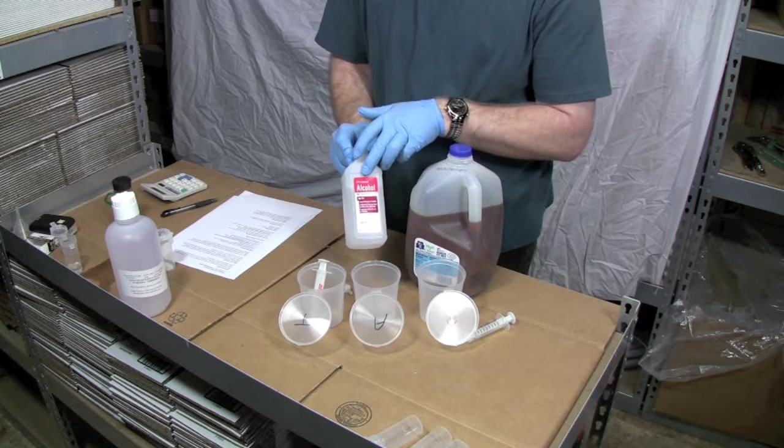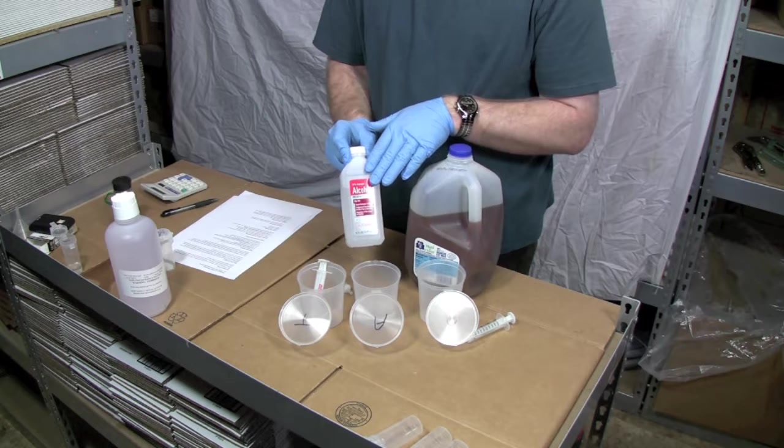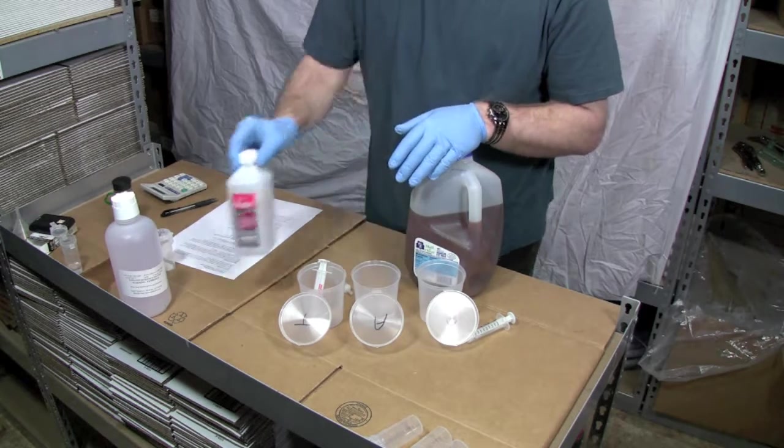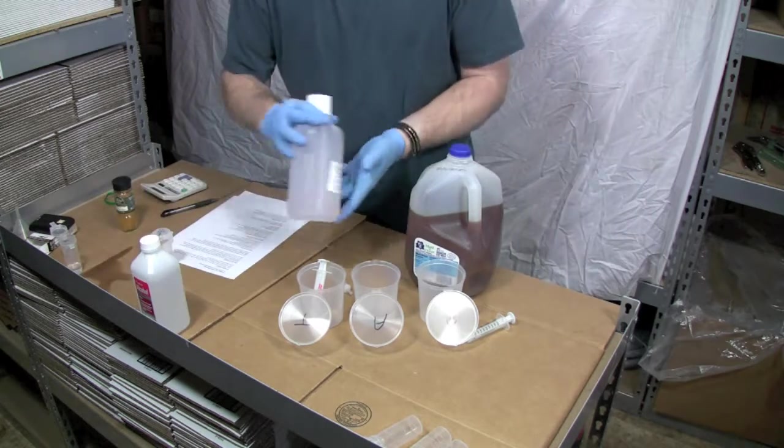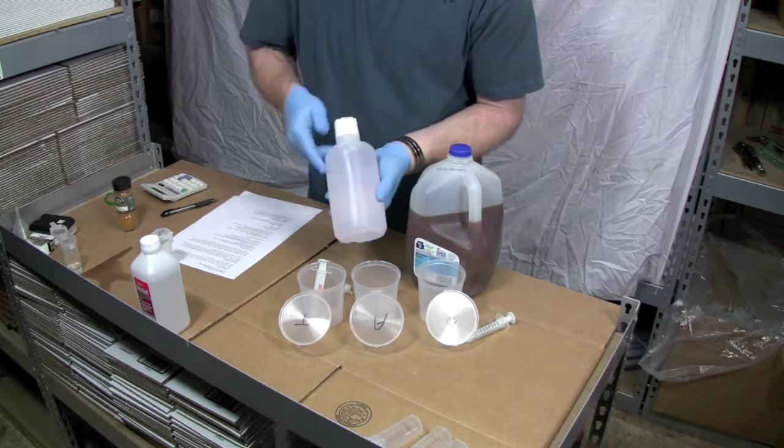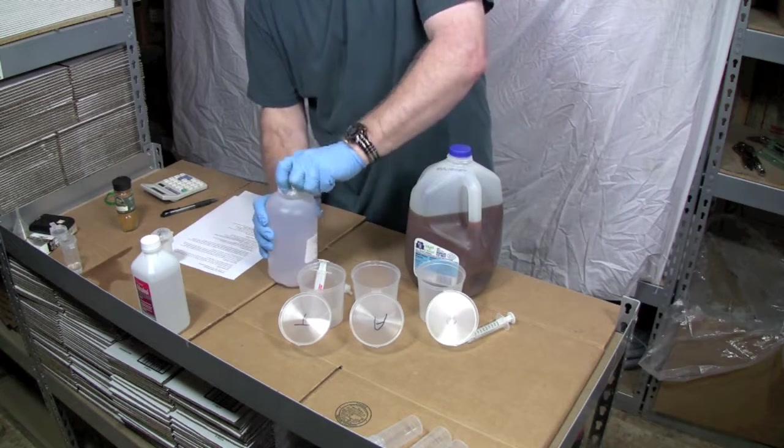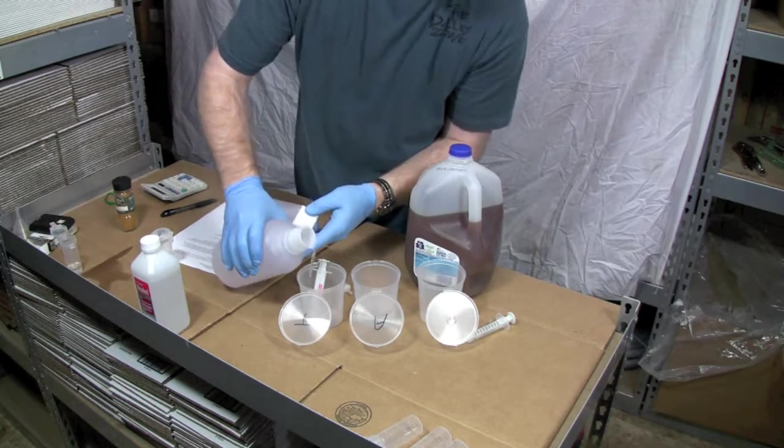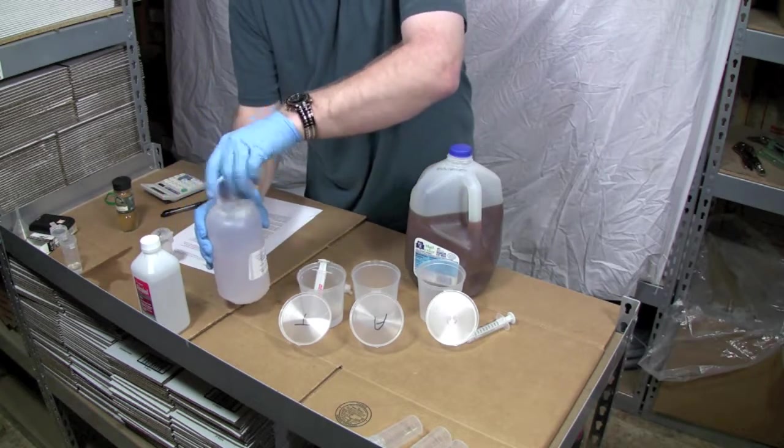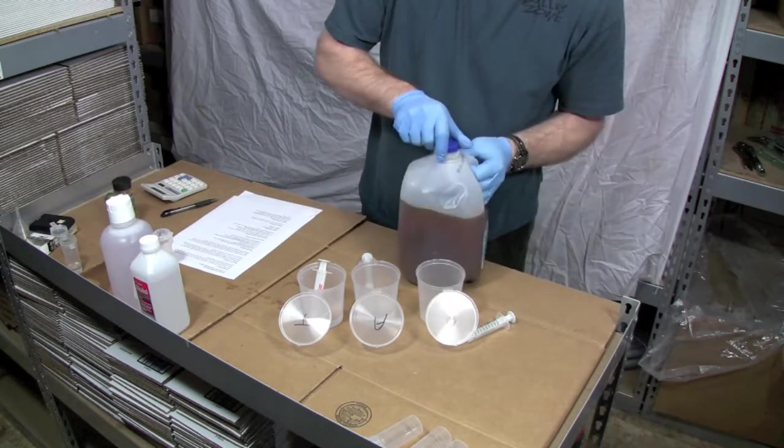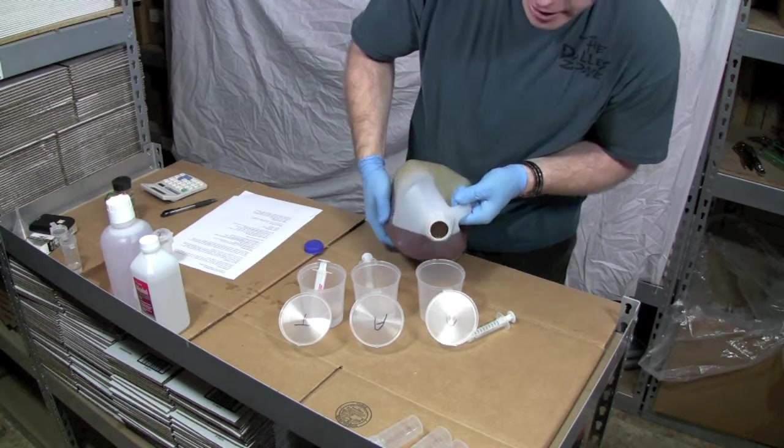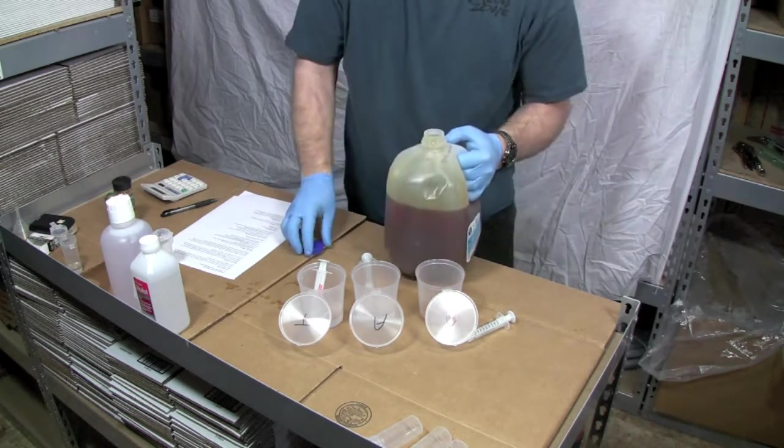I just ran over to Walmart and got 91%. If you really want to get some pure stuff we do sell 99% pure alcohol on our website but this will do for a titration. Our titration solution is now fully dissolved. The potassium hydroxide is in here. So I'm going to put a little bit of that into our titration cup. And then I'm going to put a little bit of oil.